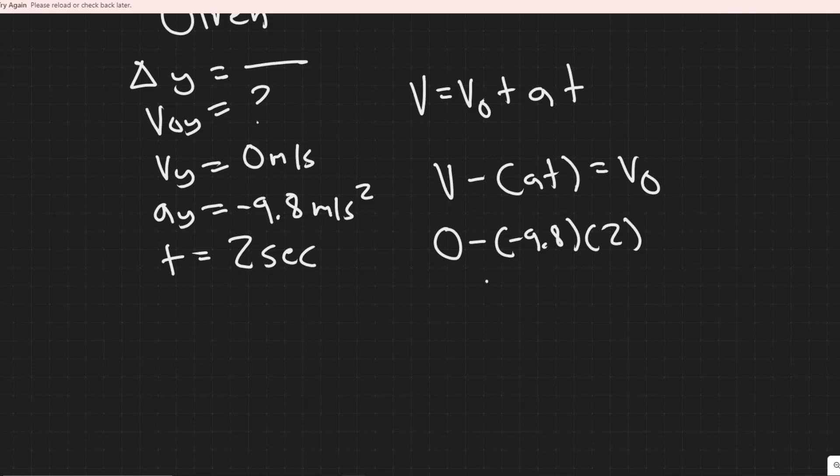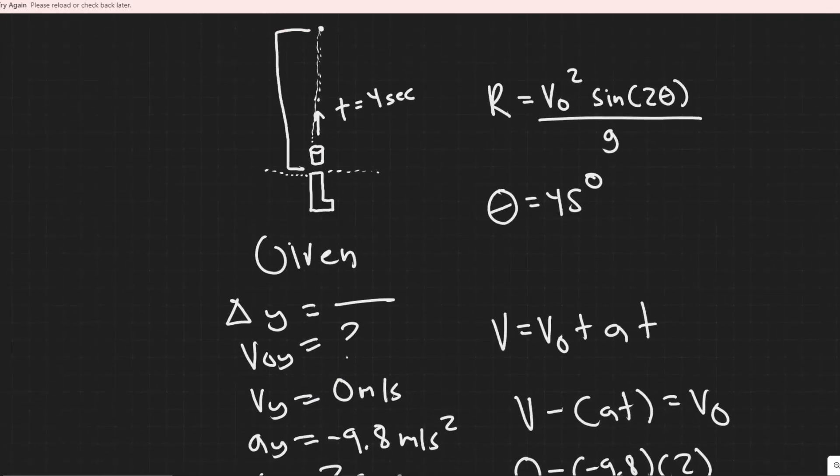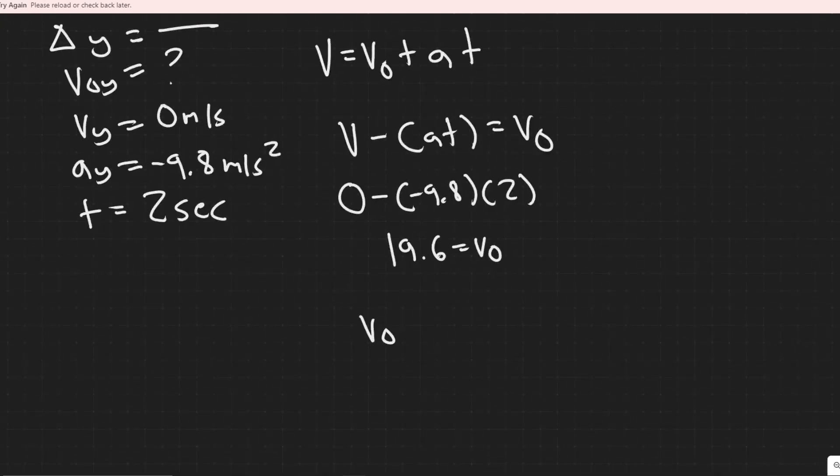When you do that, you should get that it equals 19.6, I believe. Yeah, so, 19.6. Notice that this value is positive, which just means it's going upwards. The negative just indicated the downwards direction of the gravity. We have our initial velocity here, 19.6 meters per second. So that's your v sub 0.